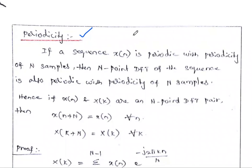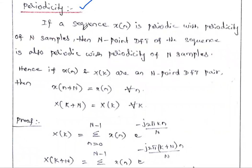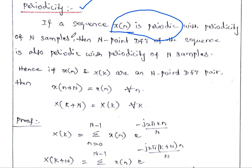So what is the periodicity property? If a given sequence X(n) is periodic with a periodicity of N samples, then the N-point DFT answer is also periodic with the same N samples. This is called the periodicity property.